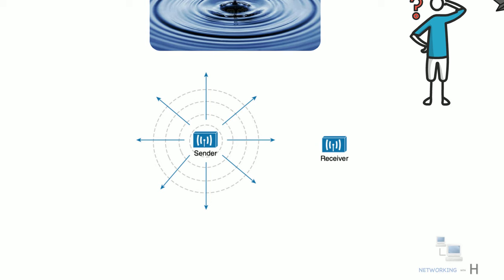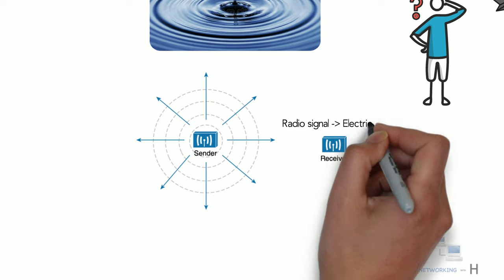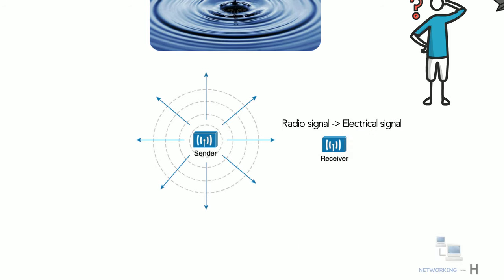The waves will eventually reach the receiver. At the receiving end of a wireless link, the process is reversed. As the electromagnetic waves reach the receiver's antenna, they induce an electrical signal. If everything works right, the received signal will be a reasonable copy of the original transmitted signal.